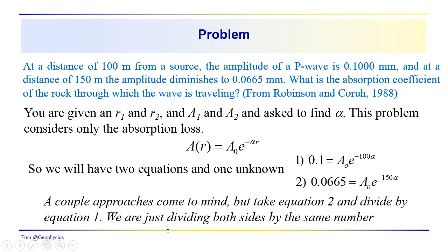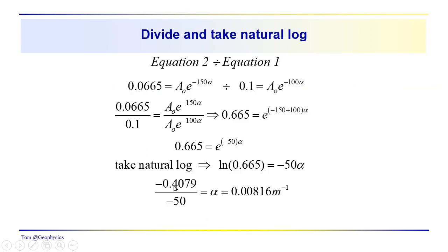So there are actually a couple approaches, but what we're going to do is we're going to take equation 2 and divide it by equation 1. So we're just dividing both sides by the same number, so that's okay. Equation 2 divided by equation 1, this is 0.0665 millimeters is equal to A0 times e to the minus 150 inverse meters times alpha, which is in inverse meters, divided by 0.1, A0 e to the minus 100 alpha. And so just going through this division here, you can see that the A0s cancel out. We get this ratio here, 0.1 goes into 0.0665, 0.665 times.